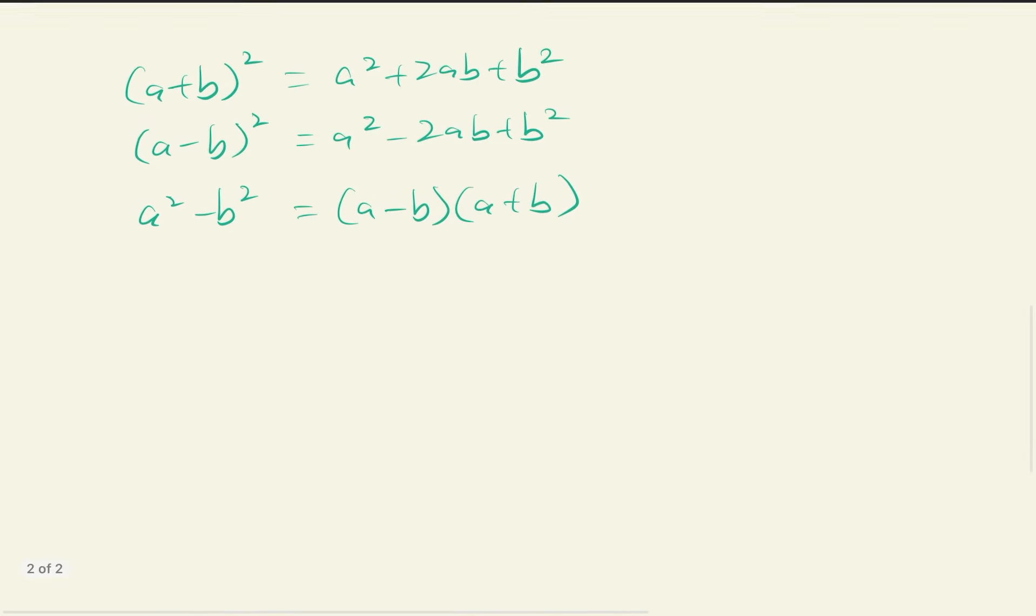So if you remember, still remember your identities, right? Your a plus b square, a minus b square, your a square minus b square. So this one, the first one, it will give you a square plus 2ab plus b square. Second one, give you a square minus 2ab plus b square. Your last one will give you a minus b times a plus b. If you still remember this, then good for you. If you don't, it's alright, man. This is just like a cheat code when you're doing your stuff.